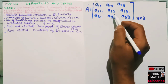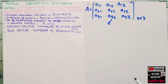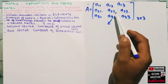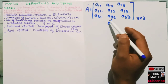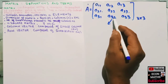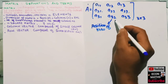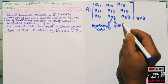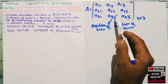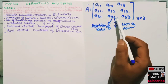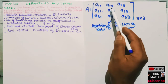For element a32, the first subscript gives us the row position — here the row is third — and the second subscript gives us the column position. So the address of this element is the third row and second column.